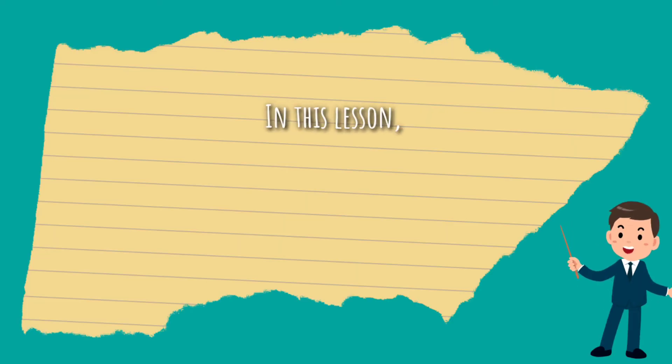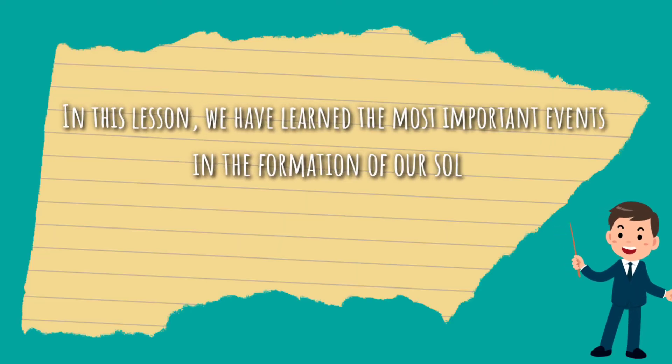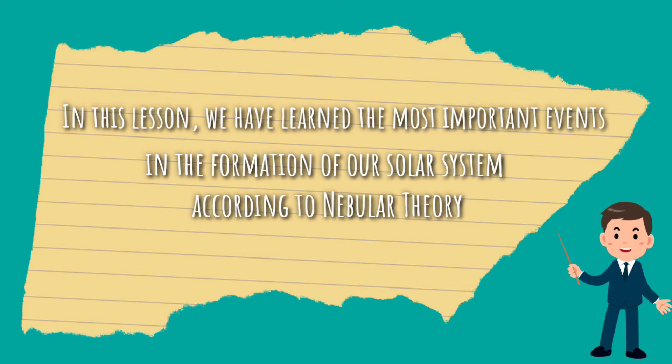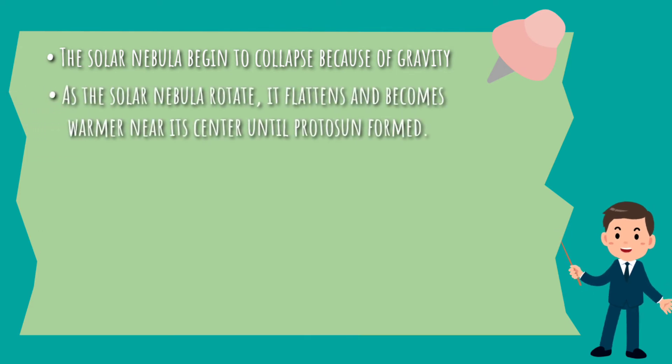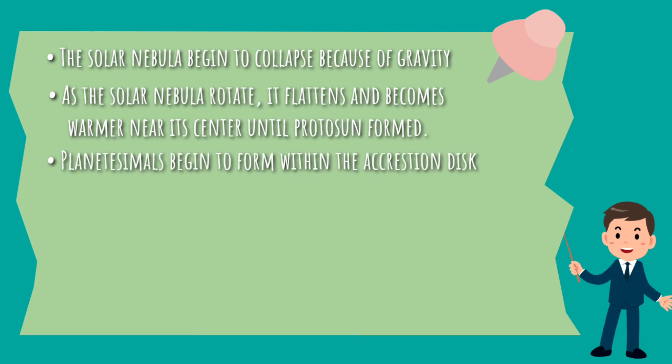In this lesson, we have learned about the most important events in the formation of our solar system according to the nebular theory. The solar nebula began to collapse because of gravity. As the solar nebula rotated, it flattened and became warmer near its center until the sun formed.